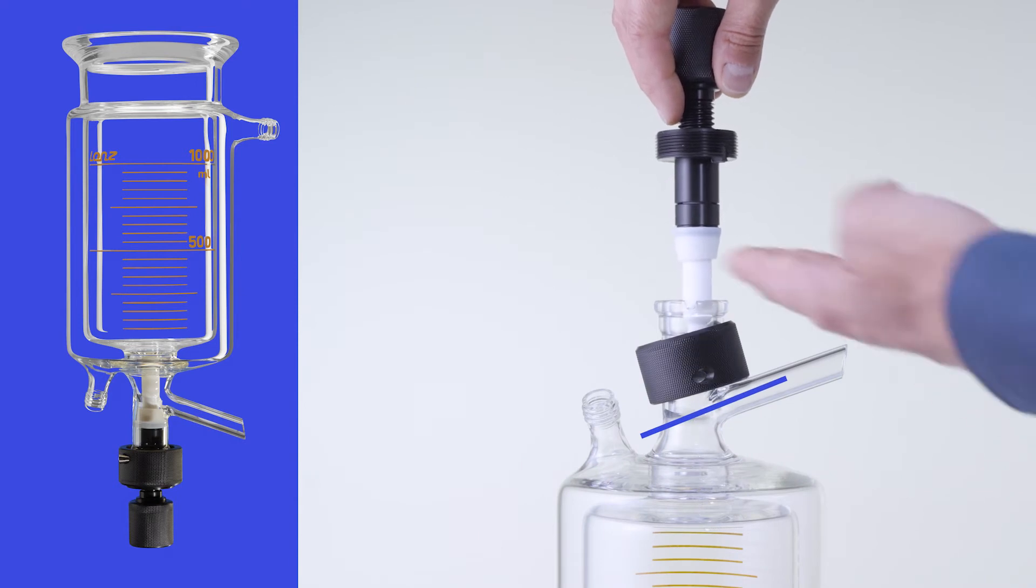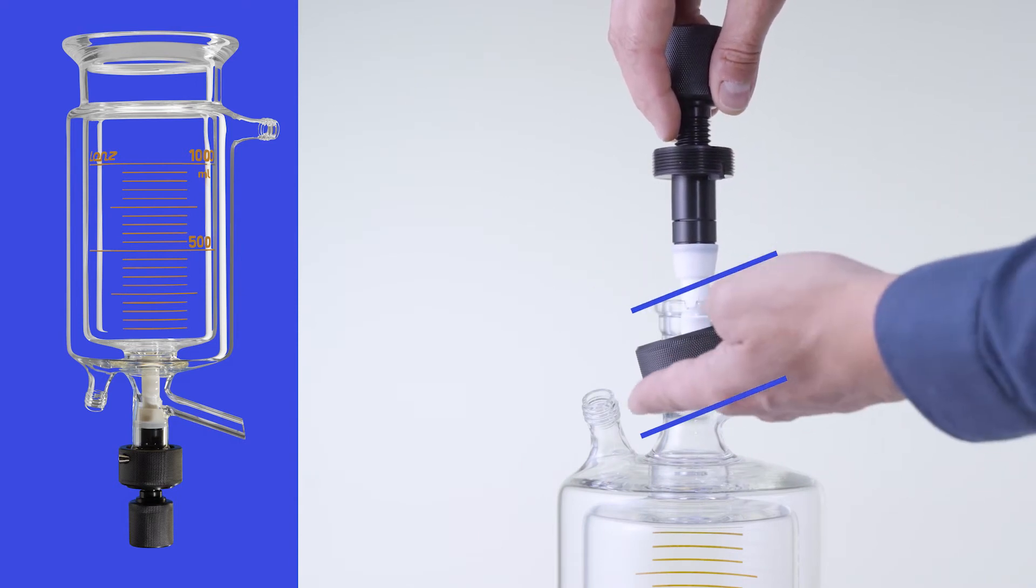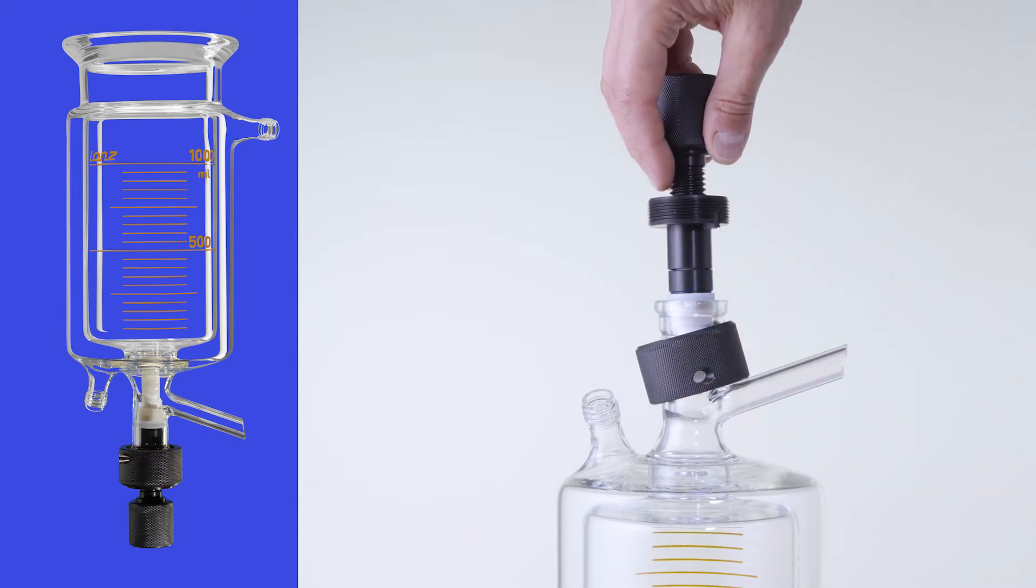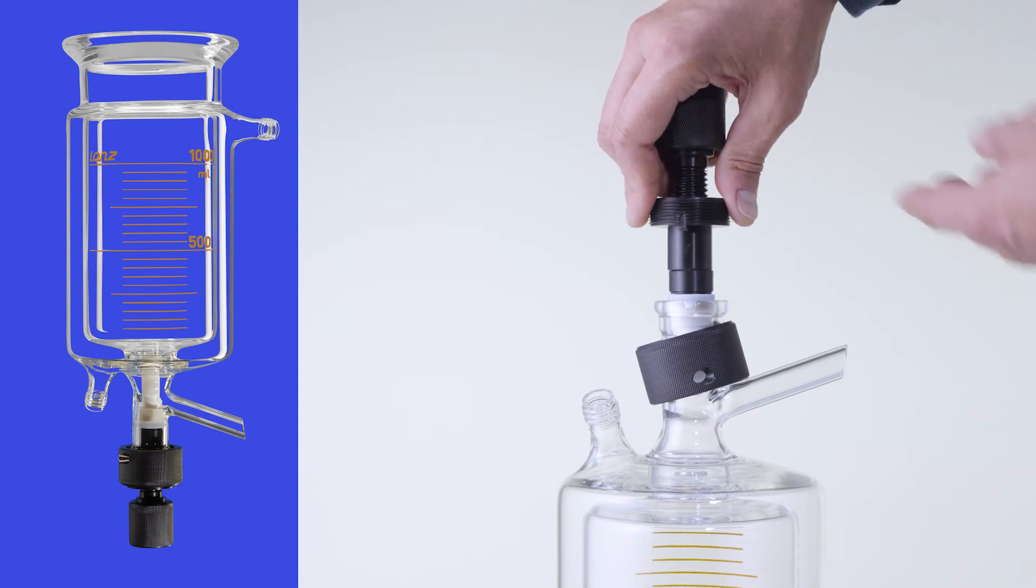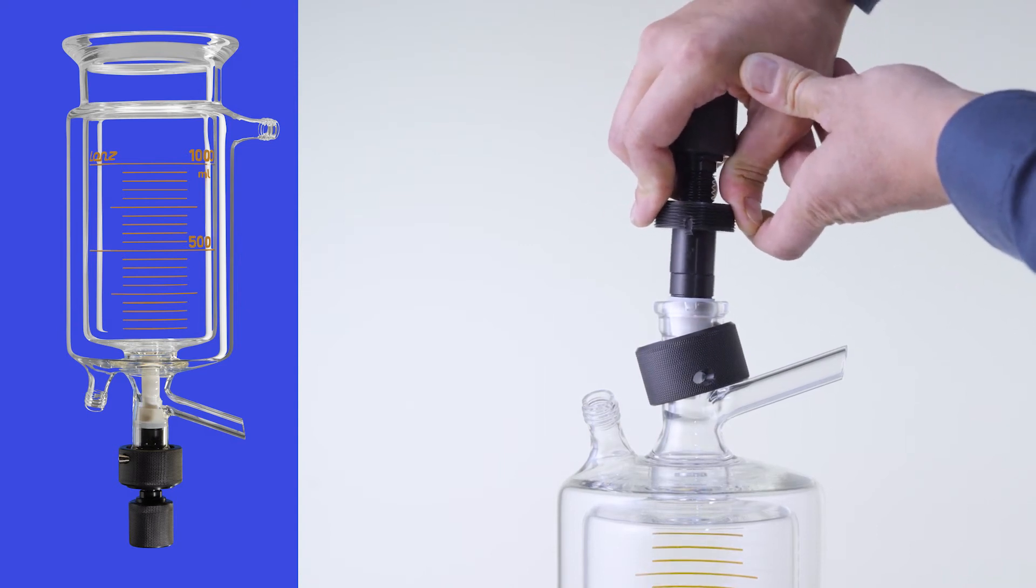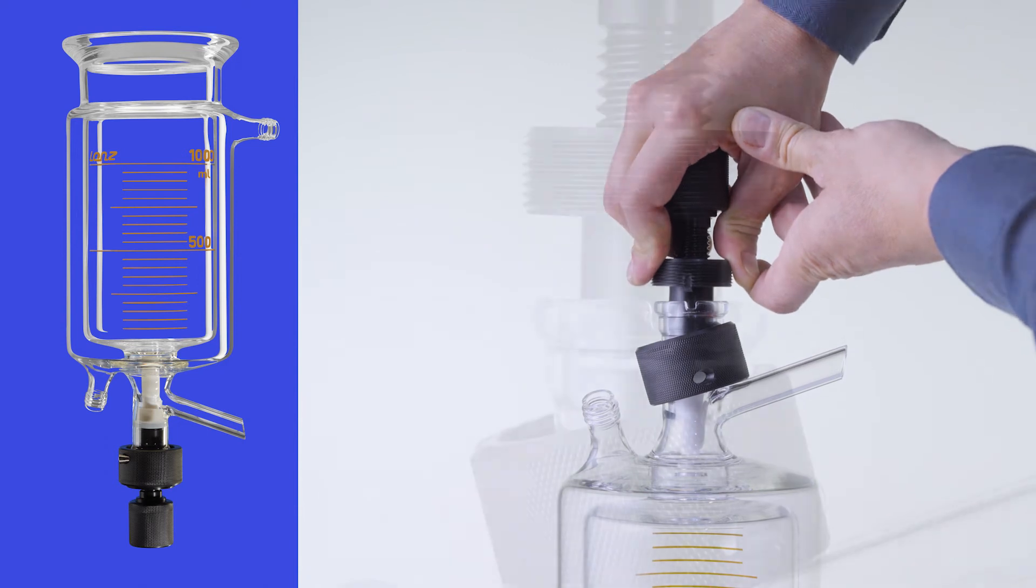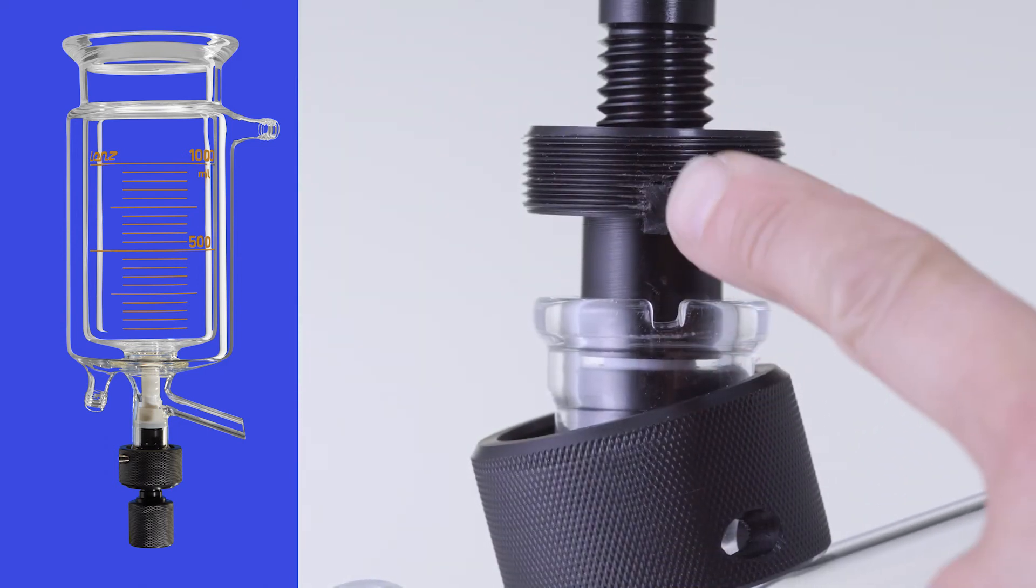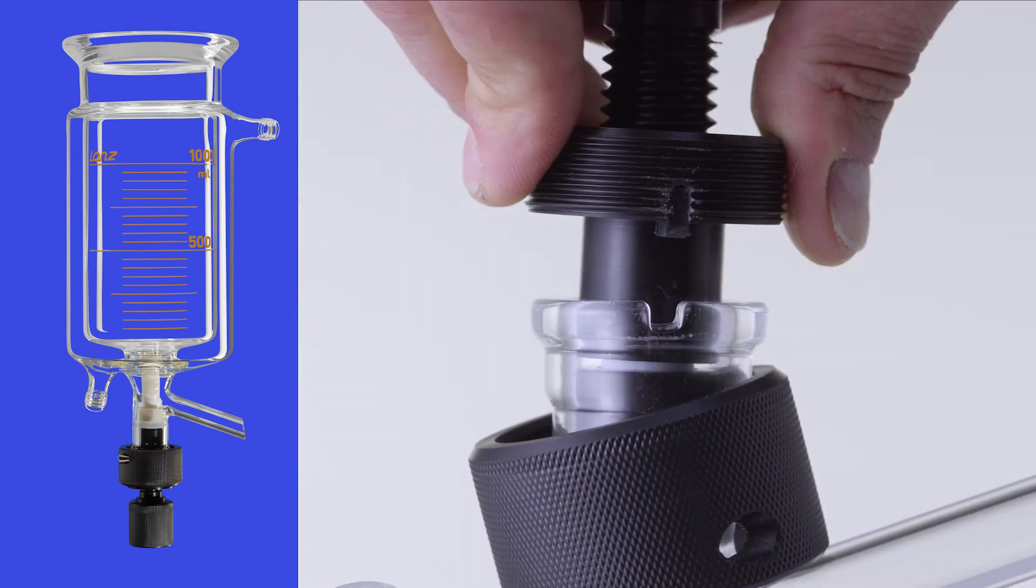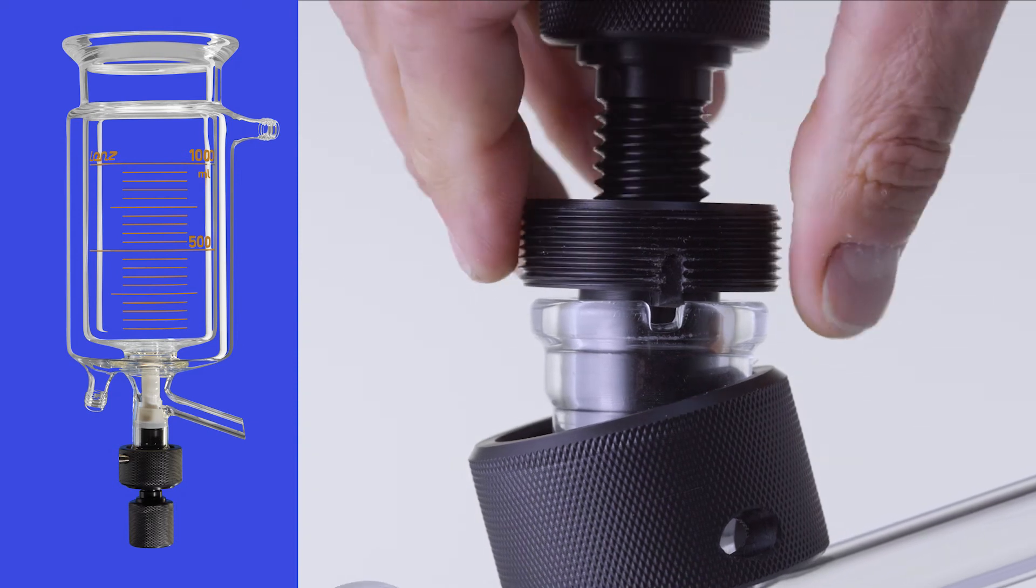Insert the valve spindle into the glass part. If valve spindles are difficult to assemble, insert the spindle using gentle circular movements. Turn the valve body so that its locking pin fits into the notch in the glass part.